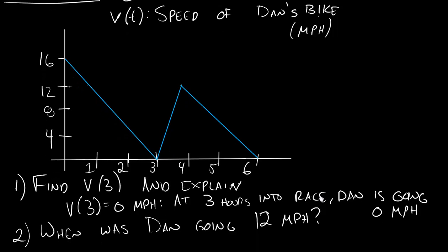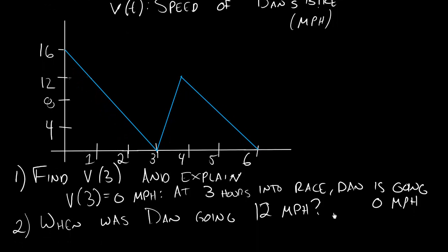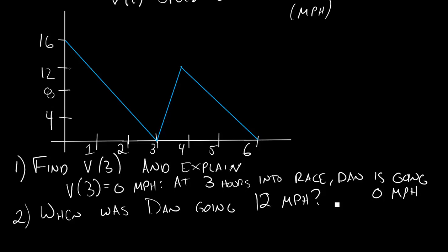The next question asks: when was Dan going 12 miles per hour? Thinking about what the function is doing, this is asking about the output of the function. It's saying, what input — when — was Dan going 12 miles per hour? So what input gives an output of 12?